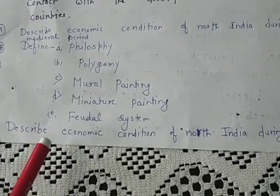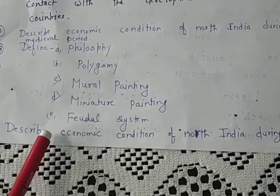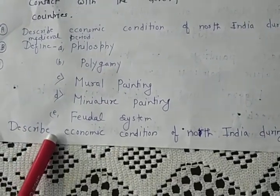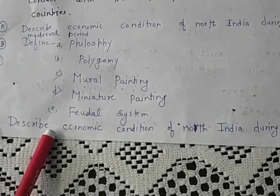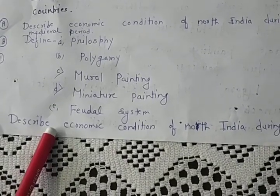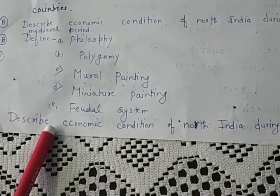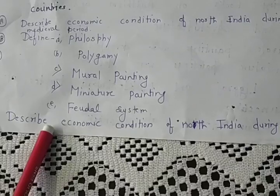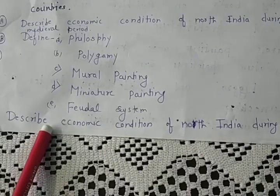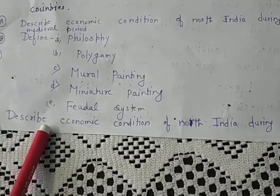What is the feudal system? The feudal system is the socio-political set-up of medieval Europe based on land holdings.